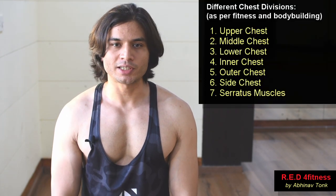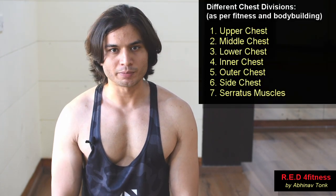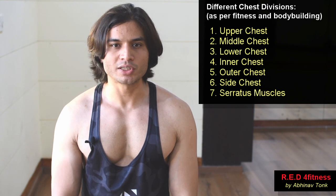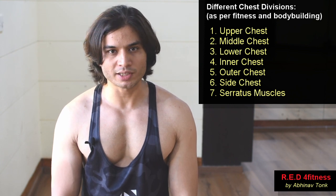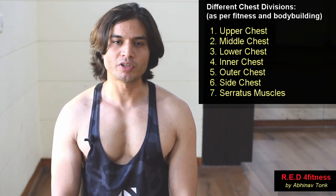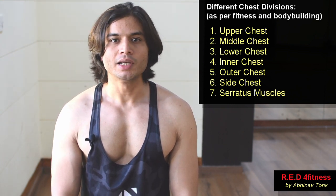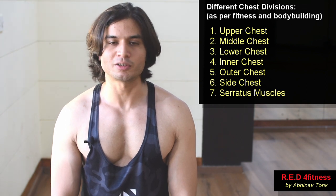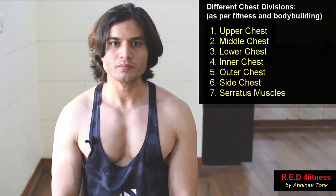In the bodybuilding and fitness world, the chest is divided into the following categories: first is upper chest, second is middle chest, third is lower chest, fourth is inner chest, fifth is outer chest, sixth is side chest, and the seventh is the serratus muscles. Let's discuss these chest muscles one by one.